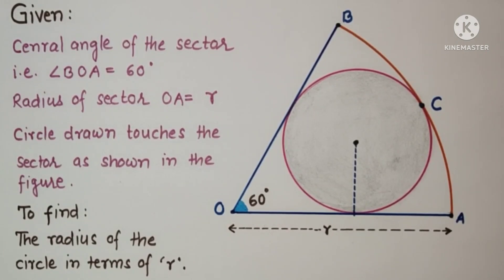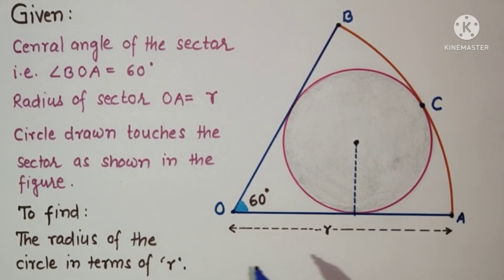Hello viewers, welcome to my channel. This time we will discuss a simple but interesting question sent by a student. In this question, we are given that BOA is a sector with central angle 60 degrees and radius of the sector is given as R.